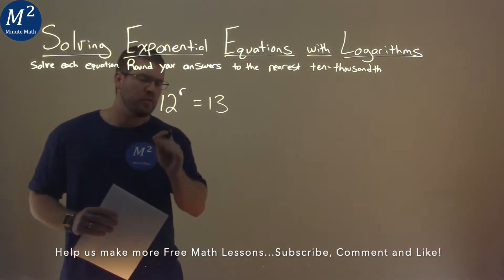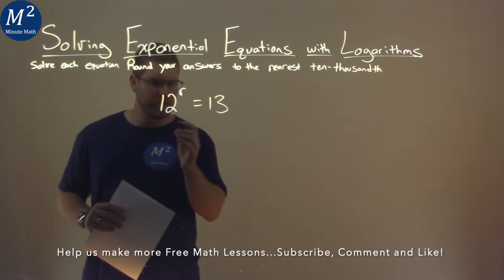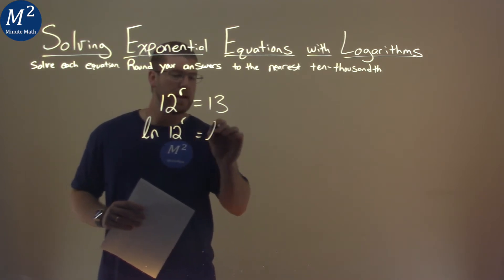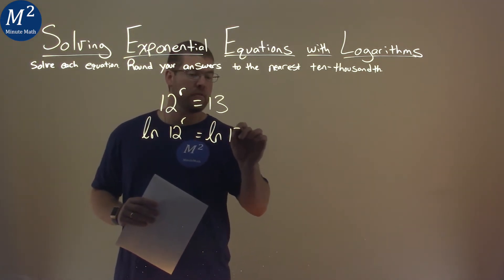We can take the natural log of both sides of the equation. If I take the natural log of 12 to the power of r, it's equal to the natural log of 13.